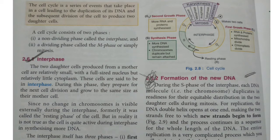What are the phases that a cell cycle consists of? A cell cycle consists of two phases: first, a non-dividing phase called interphase, and second, a dividing phase called the M-phase, or simply mitosis.